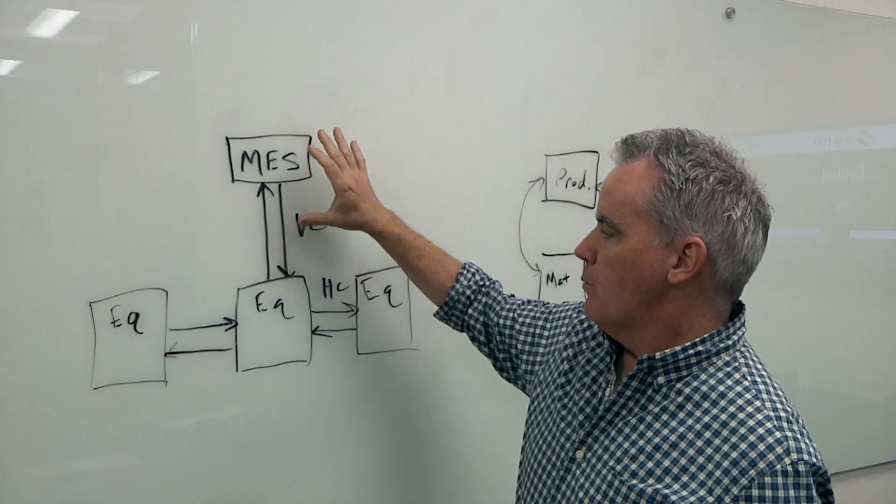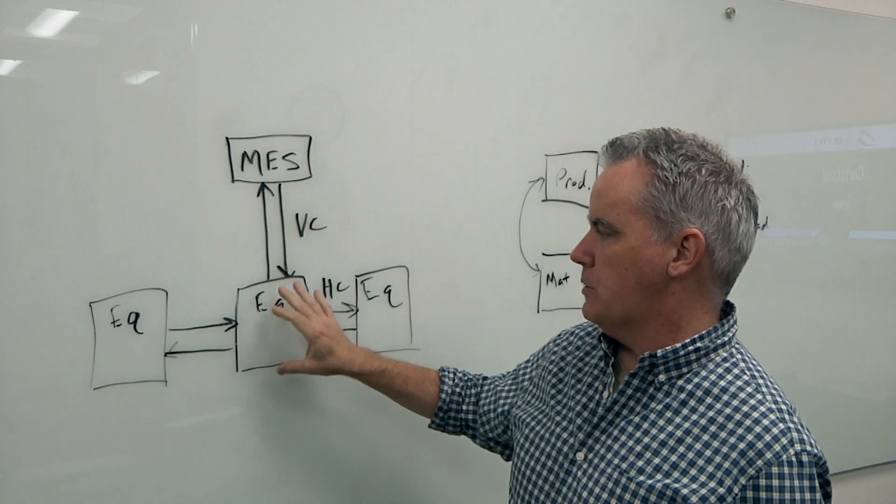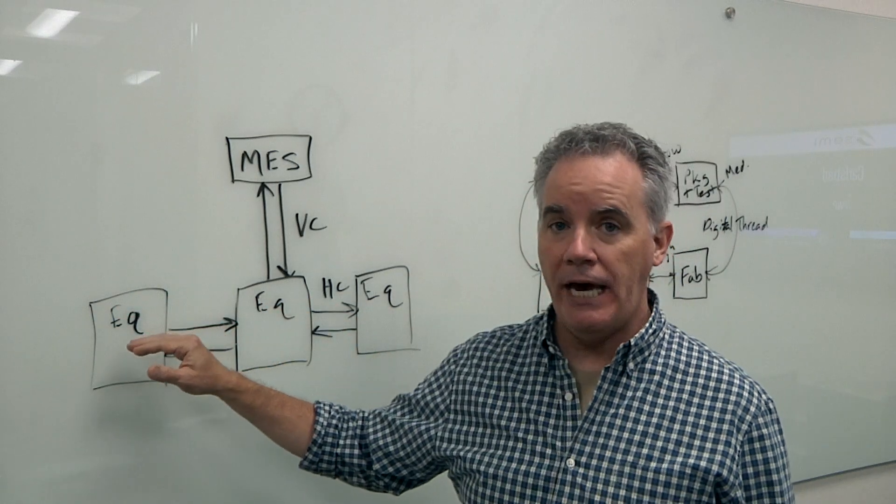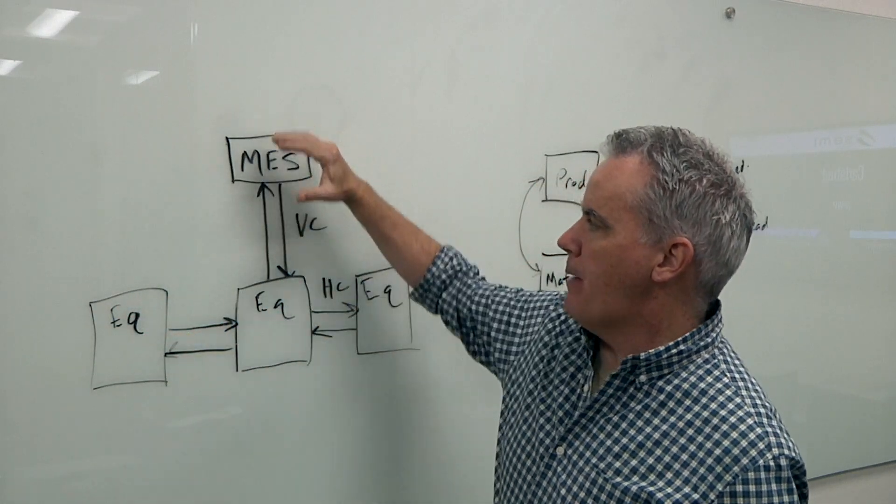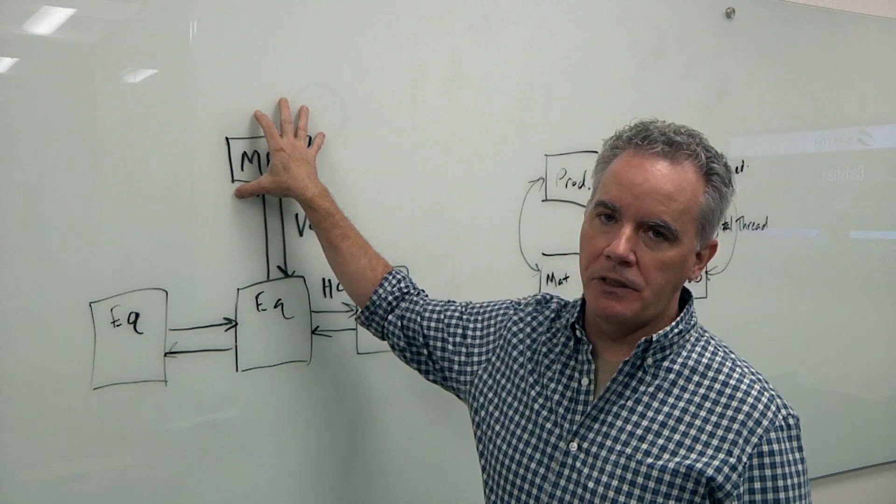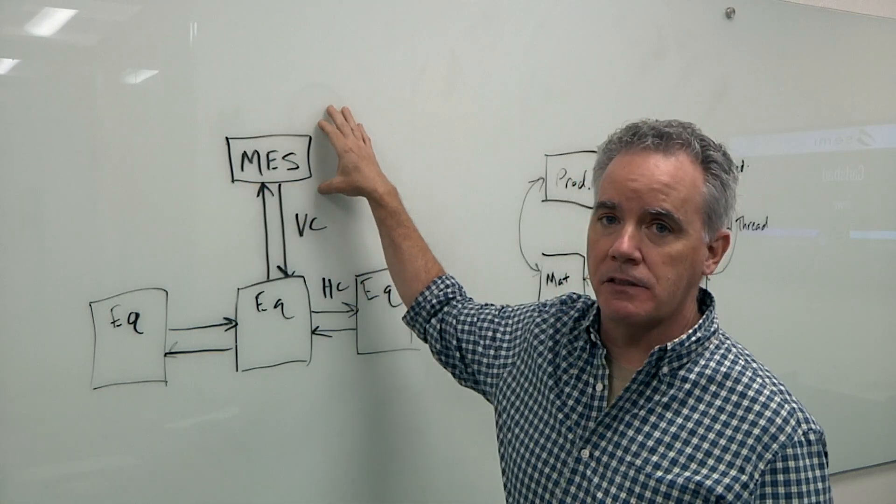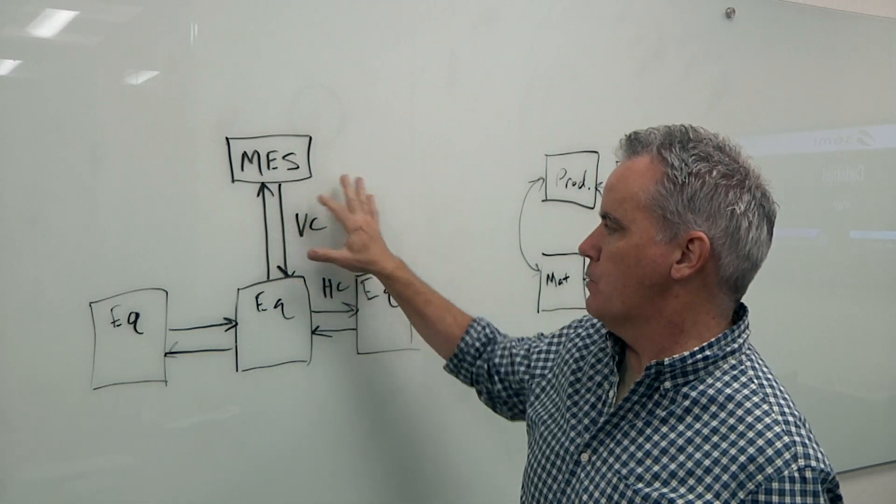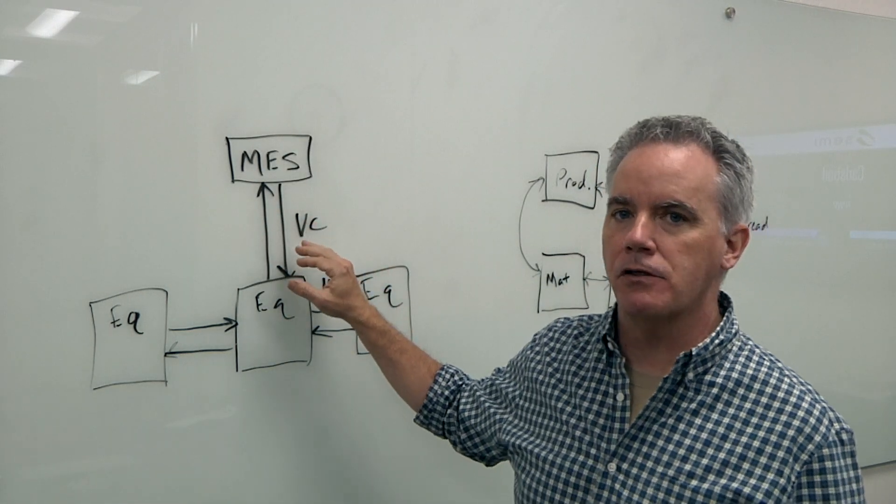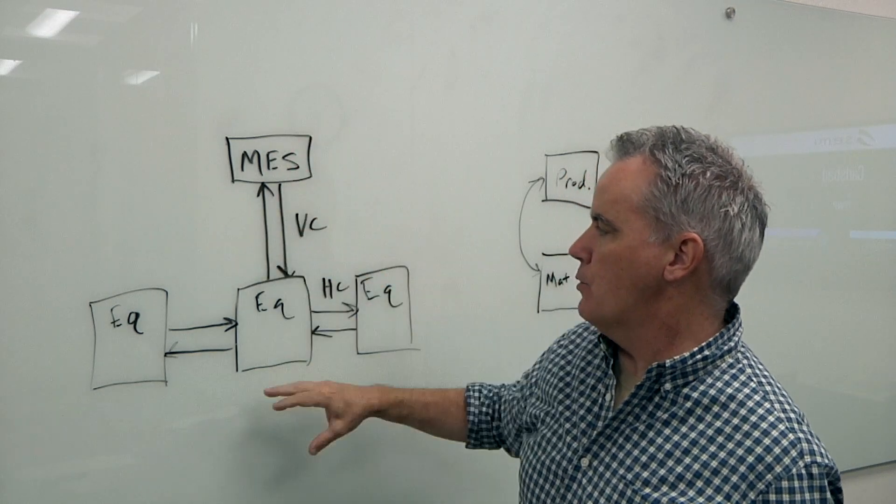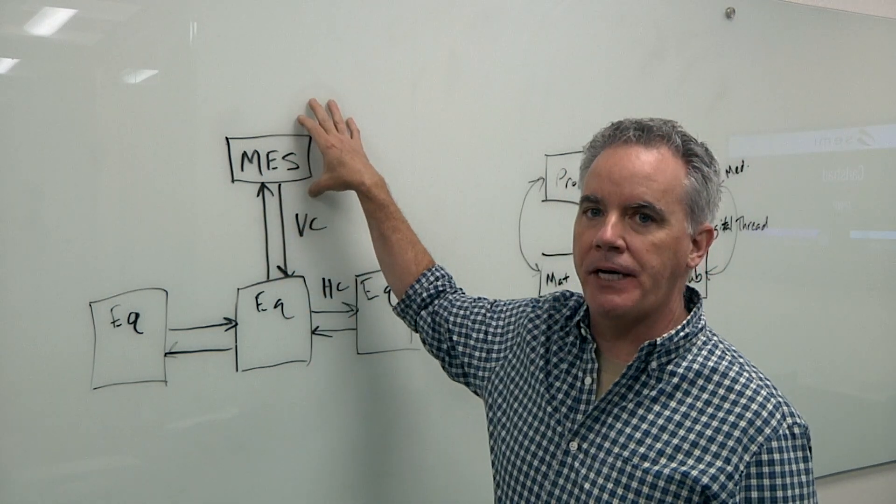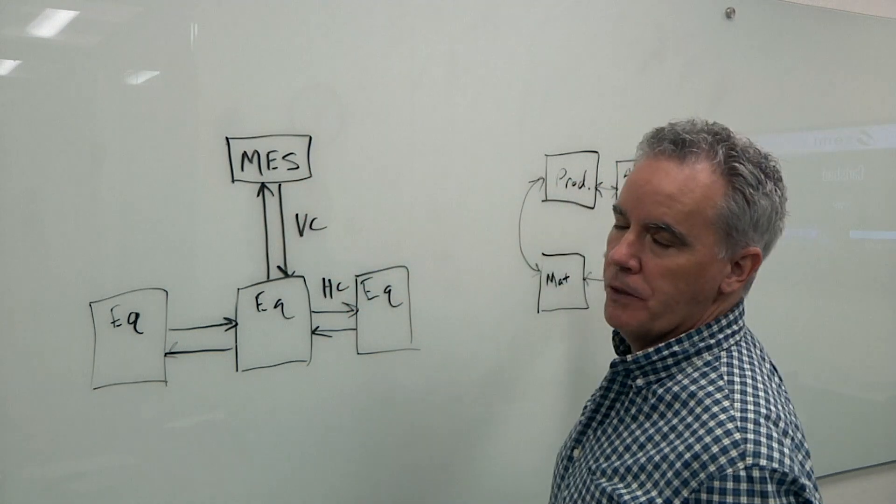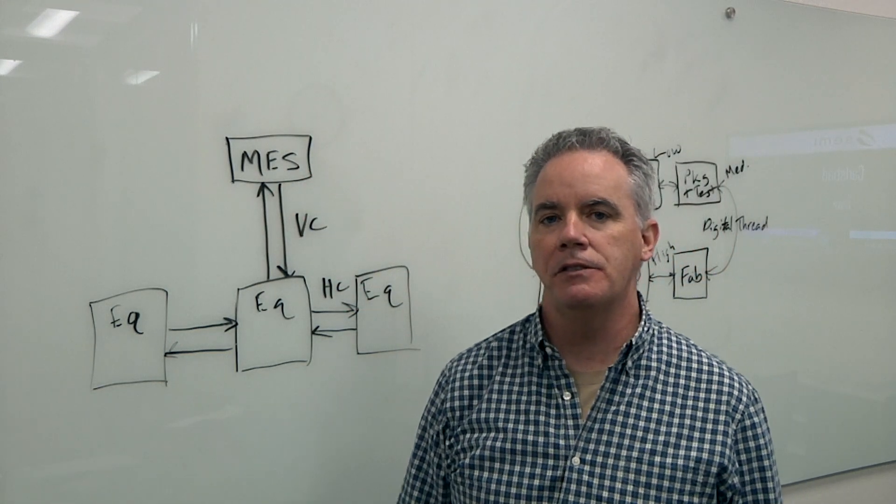More recently we have the vertical communication, which is taking the horizontal communication that we have between the equipment and passing that to the manufacturing execution system, the MES system for the fab. So we have vertical communications passing this up to a higher enterprise level within the fab. That also becomes important later when we start working into the digital thread.